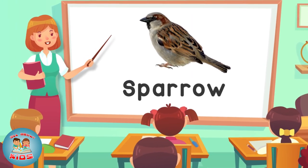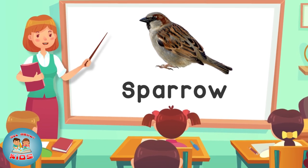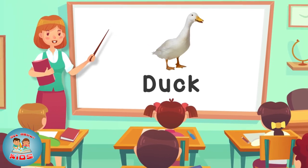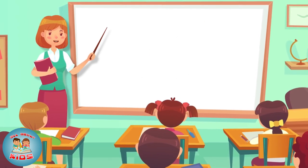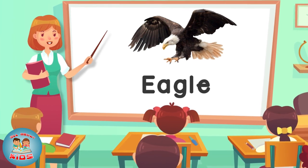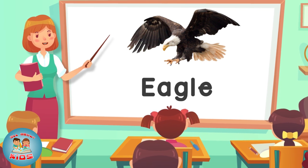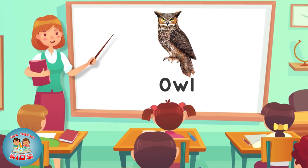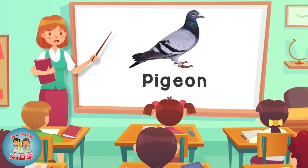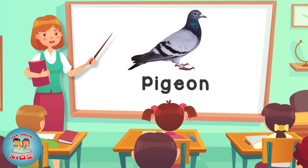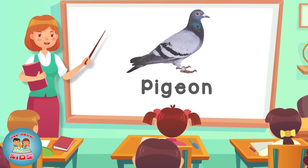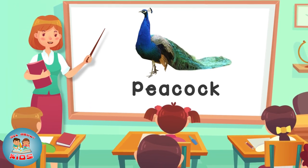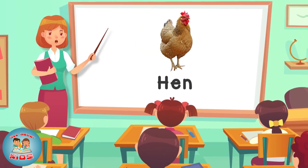A sparrow — this is a sparrow. Duck — this is a duck. Eagle — this is an eagle. This is an owl. Pigeon — this is a pigeon. Peacock — this is a peacock. Hen — this is a hen.